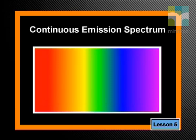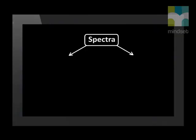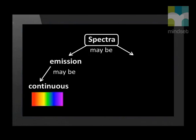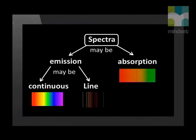The spectrum appears as a continuous band of colors with no sharp boundaries between colors. This kind of spectrum is called a continuous emission spectrum, or simply a continuous spectrum. There are two main kinds of spectra: emission and absorption spectra. Continuous emission spectra are only one kind of emission spectra; the line emission spectrum is another kind.